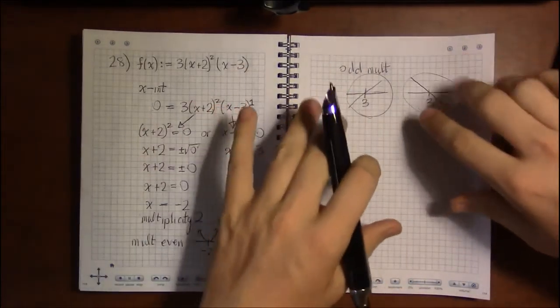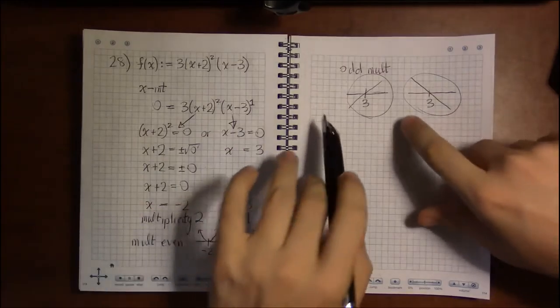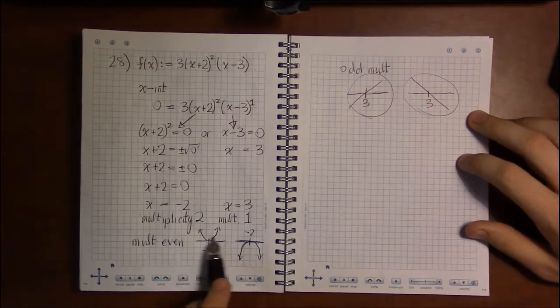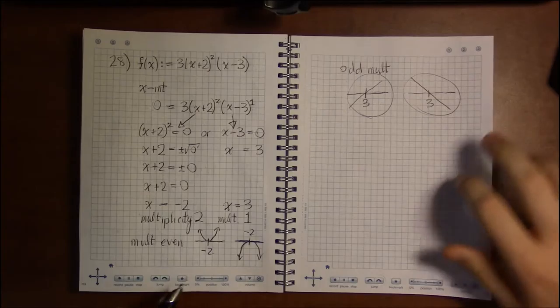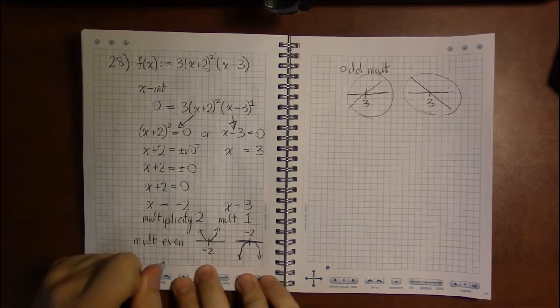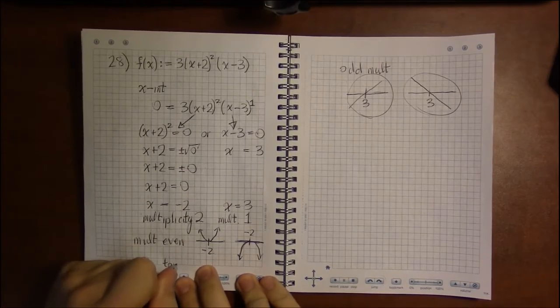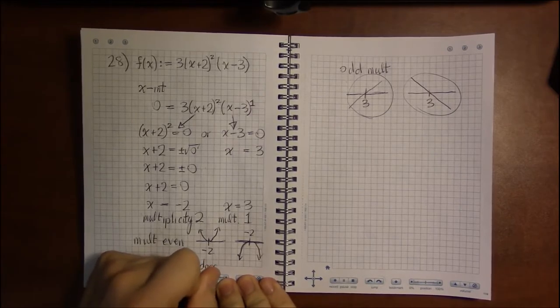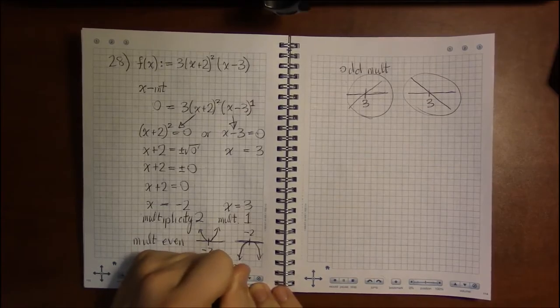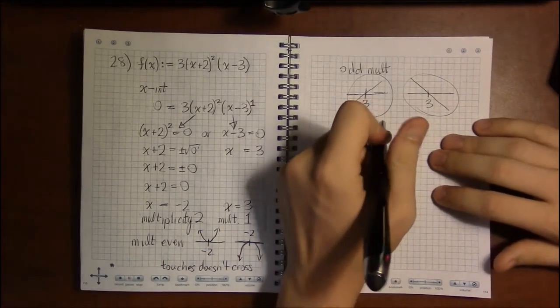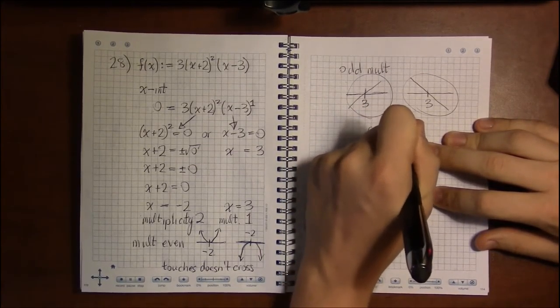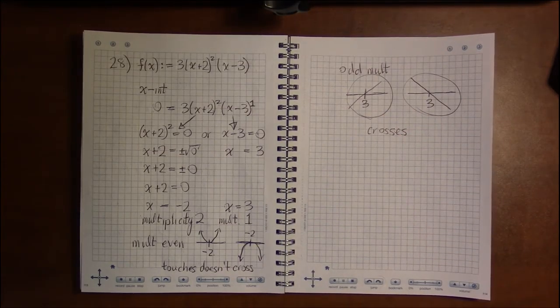That's how the graph would look if you imagine we're just zoomed in on x = 3. There's other stuff going on outside of here—the graph is behaving however it does outside—but right now we're just interested in this little neighborhood of 3 and this little neighborhood of -2. So to write out the book's terminology: when the multiplicity is even, the graph touches but does not cross, and when the multiplicity is odd, the graph crosses the x-axis at that x-intercept.